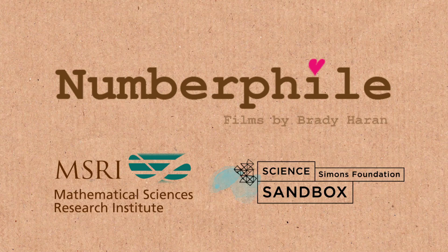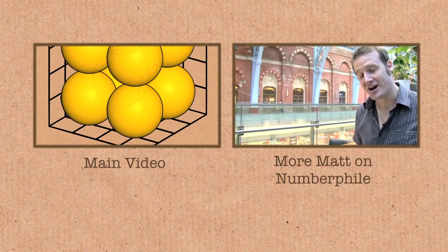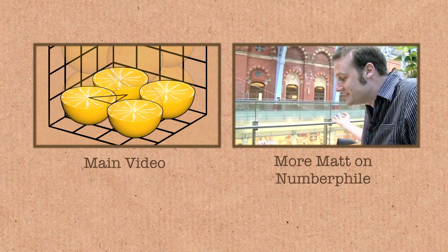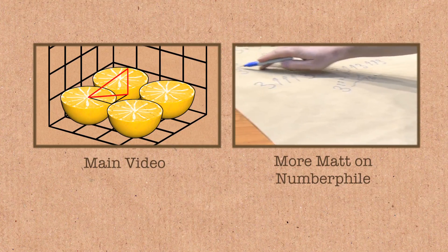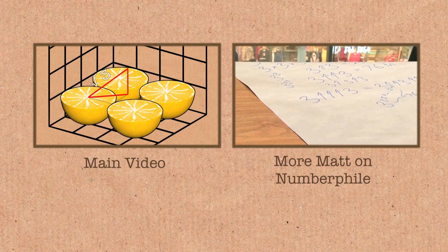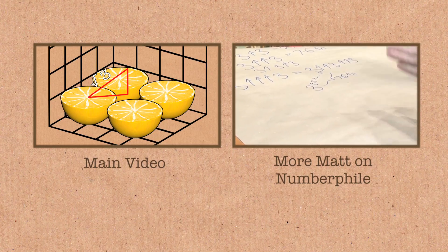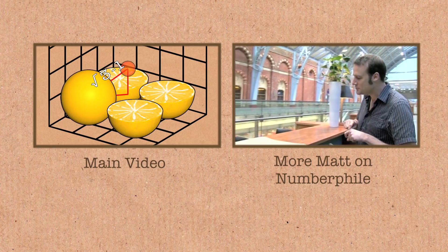You get a number that is absolutely off the chart. You couldn't write these numbers down. You'd run out of pens in the universe. Don't forget, just three, three stacked together was 7.6 trillion. Now we've got a stack of three, 7.6 trillion of them high. And the question is, why would you want to know?